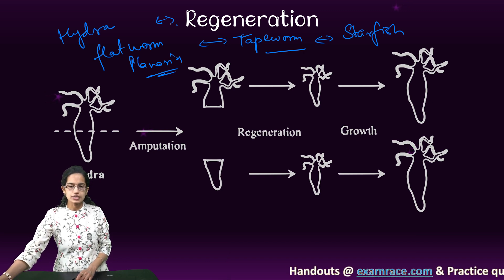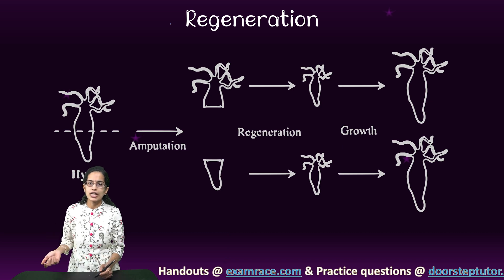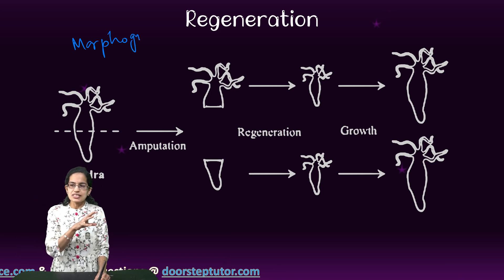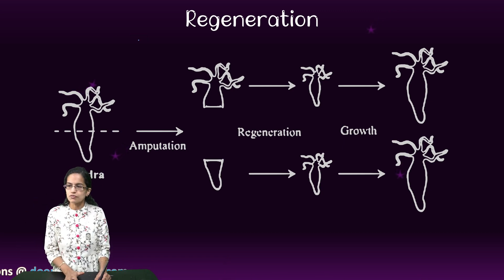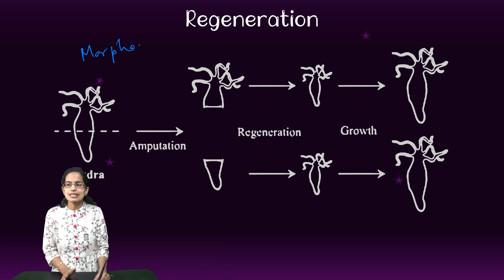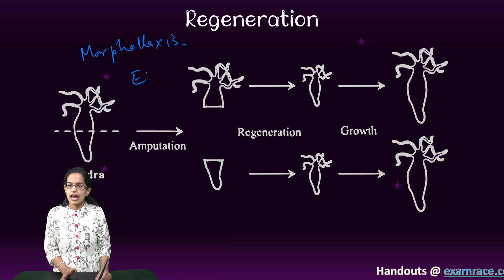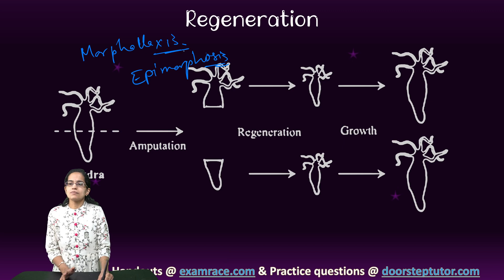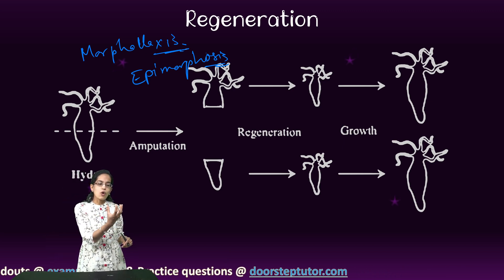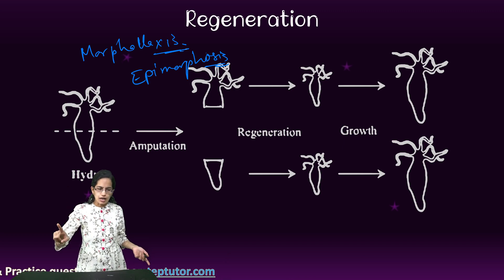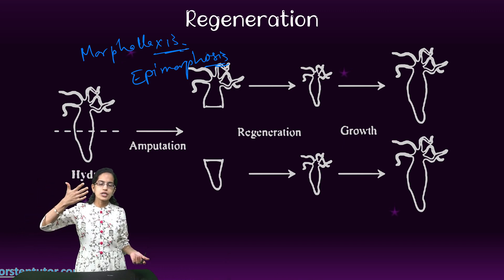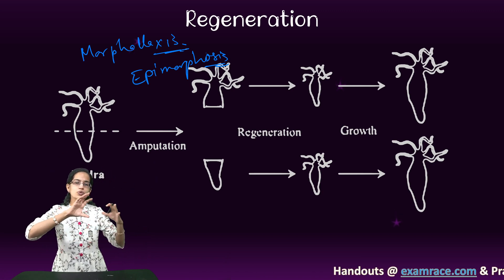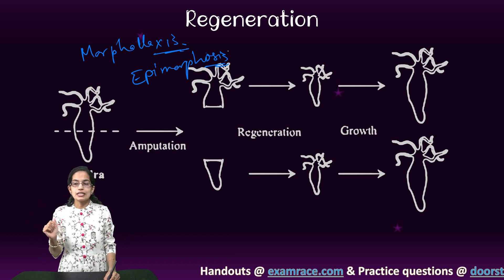Regeneration occurs through two processes: morphallaxis and epimorphosis. In morphallaxis, there is dependence on tissue patterning. In the hydra example, the foot and head activators separate out so that two identical hydras are formed from the divided parts.